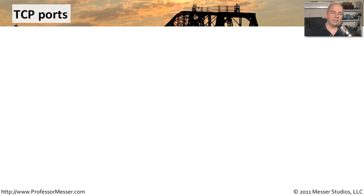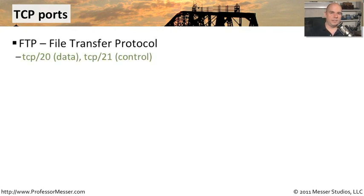Now we're going to go through a list of services and the port numbers associated with those services. There is a lot here to memorize, but you've probably already seen some of these port numbers in use. Let's start with FTP. In an active FTP communication, two different TCP port numbers are used: TCP port 20 is used for data, and TCP port 21 is used for control information.